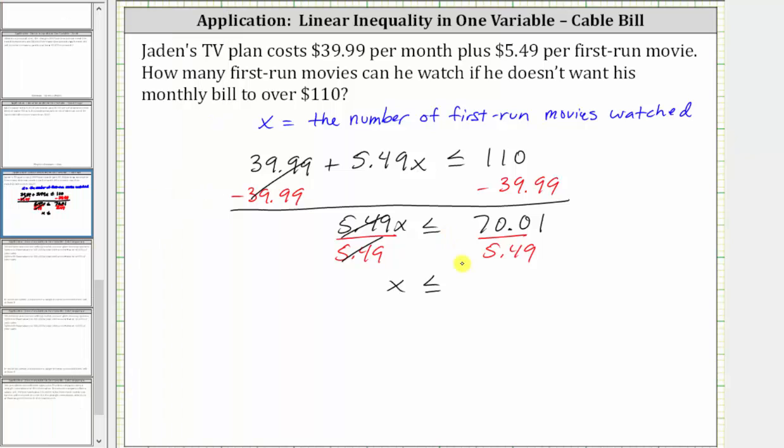So x must be less than or equal to 12, which means that Jaden can watch up to 12 first-run movies and his bill will not be over $110.